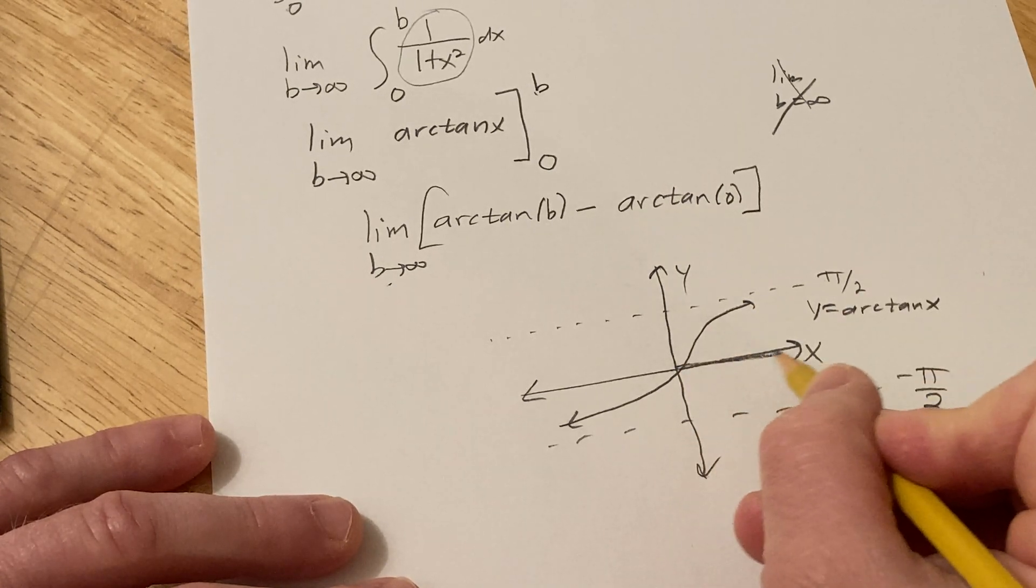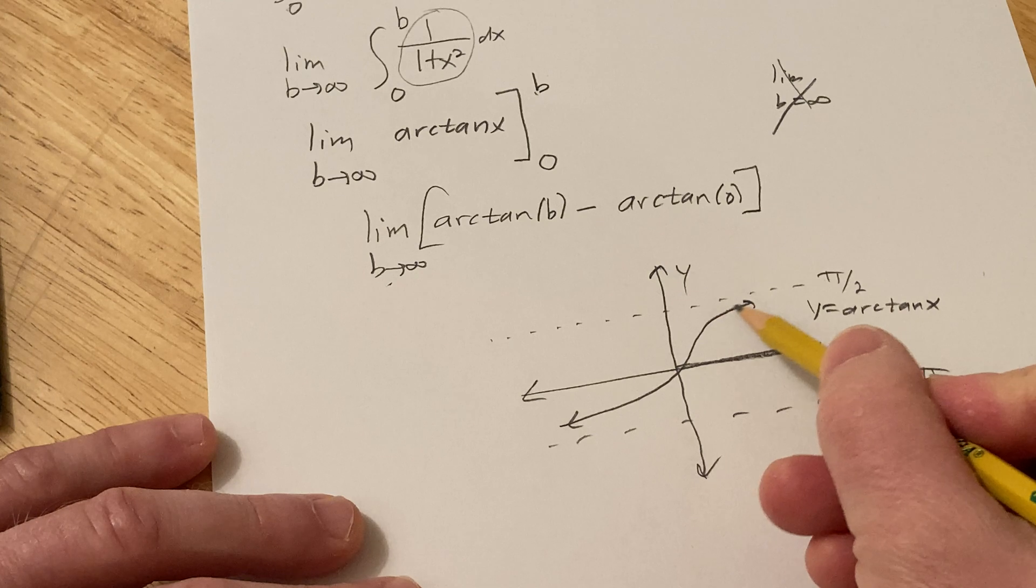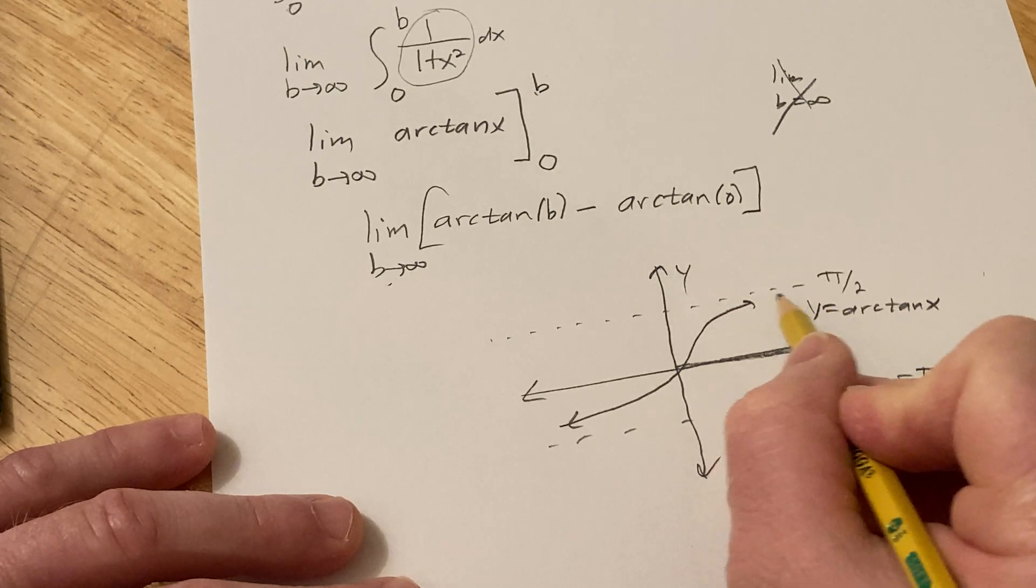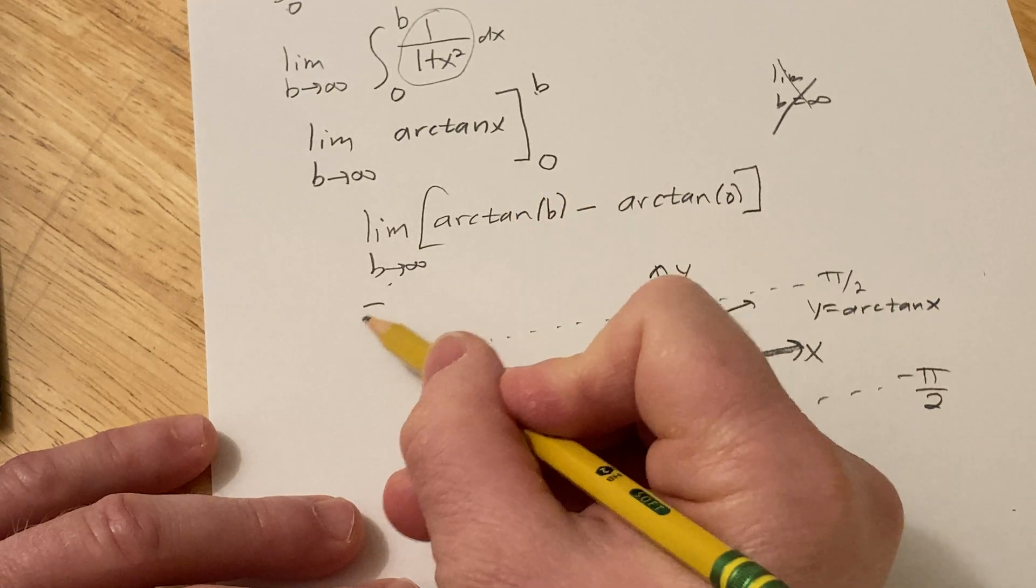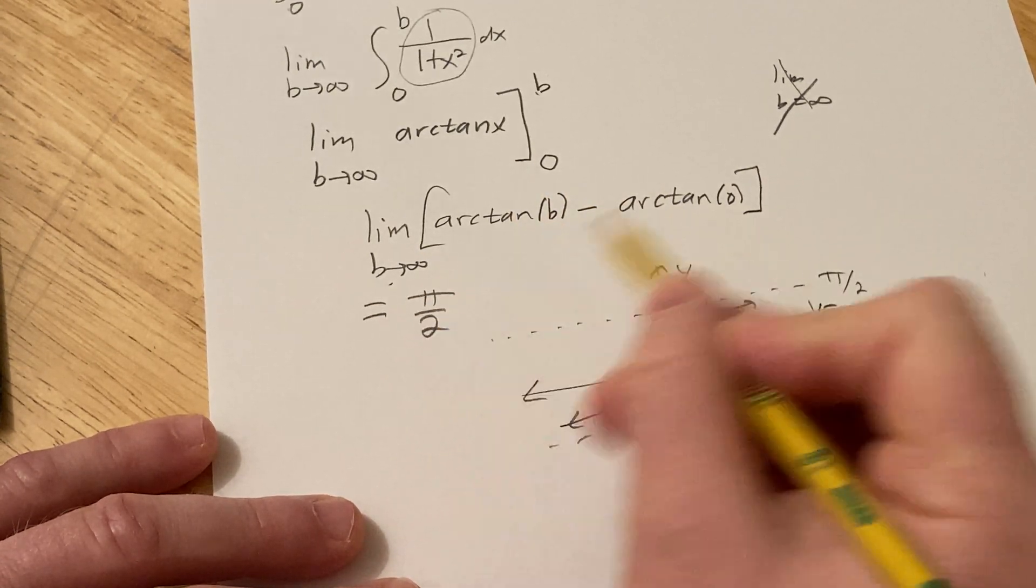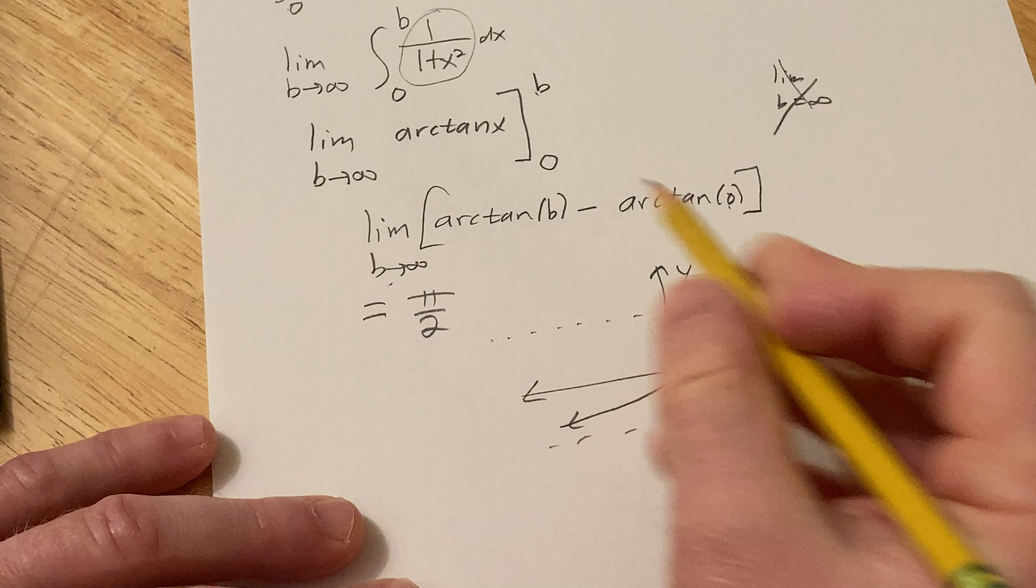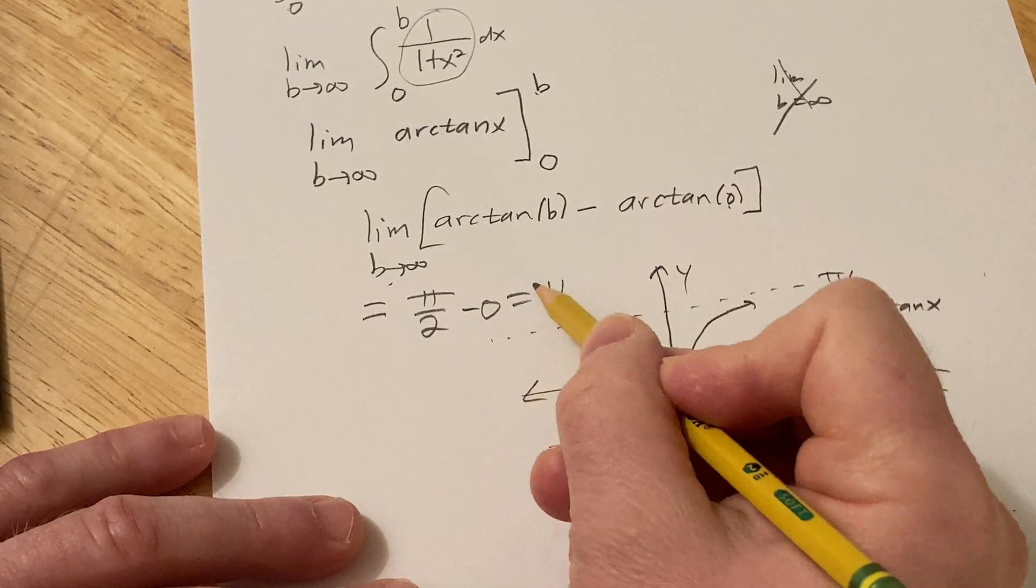As B approaches infinity, it gets bigger and bigger and bigger, and the y values here get closer and closer to this horizontal asymptote. So this approaches pi over 2, so this is pi over 2, and the arctan of 0, as you can see from the graph, is 0, so we simply get pi over 2.